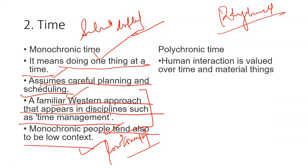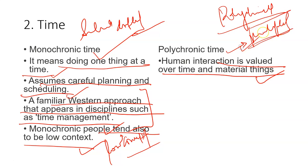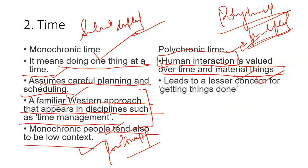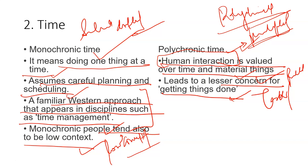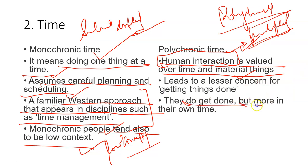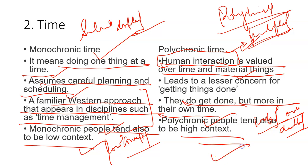In polychronic time, human interaction is valued over time and material things. Polychronic means doing multiple things at one time — a lot of tasks together. Here, relationship is more important than task, and there is less concern for getting things done strictly. People do get things done, but in their own time — they don't follow a strict deadline and do things as per their own convenience. Polychronic tends to be on the high context side, and in Asian countries you get more polychronic behavior, as people are always busy doing many things at once.